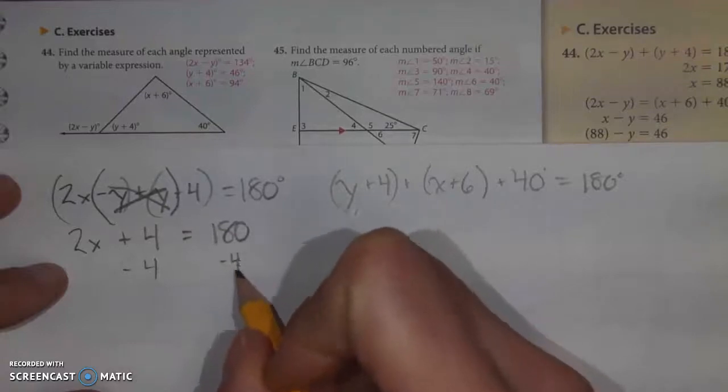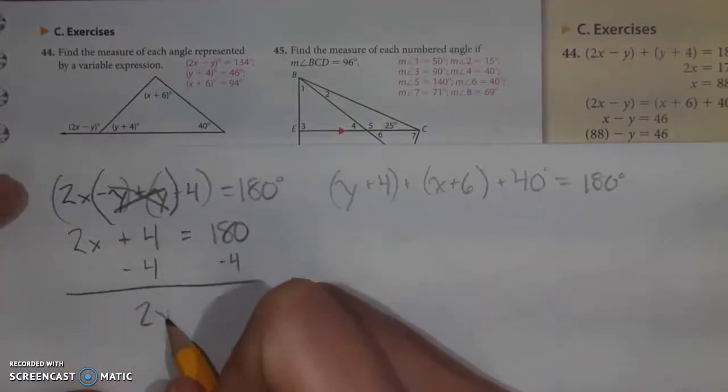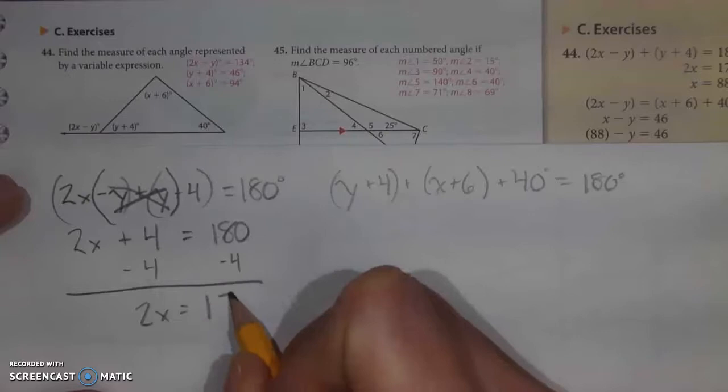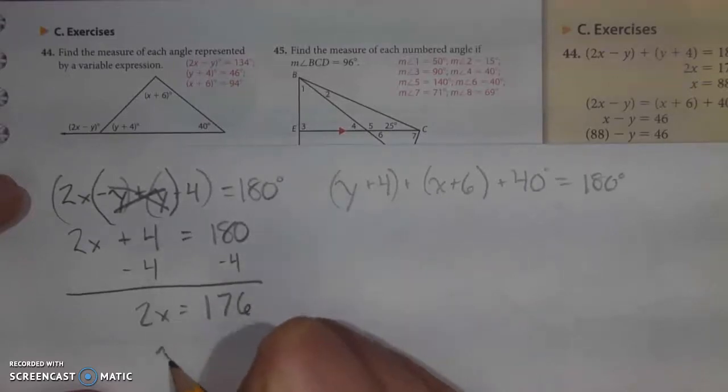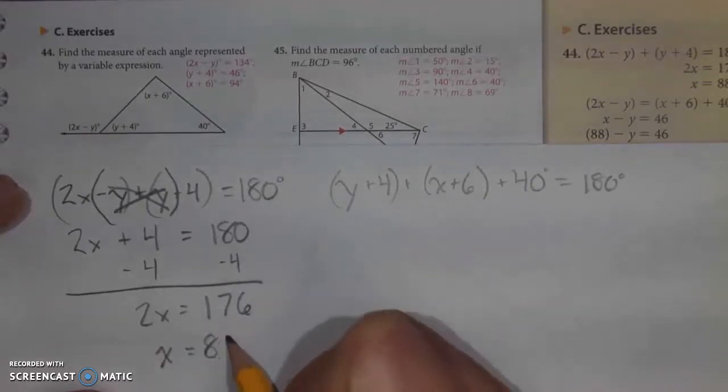So I have 2x plus 4 is equal to 180. Subtracting 4 from both sides gives me 2x is equal to 176. Therefore, just x is equal to 88.